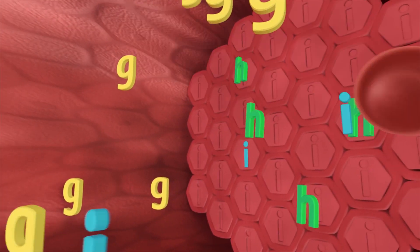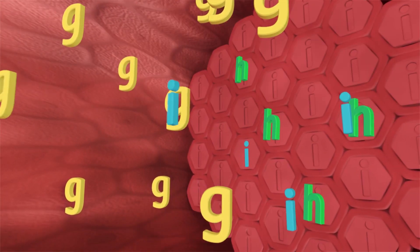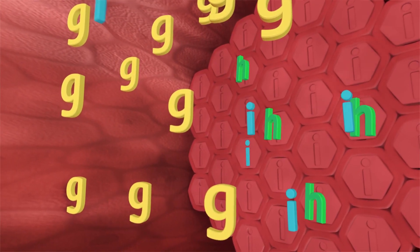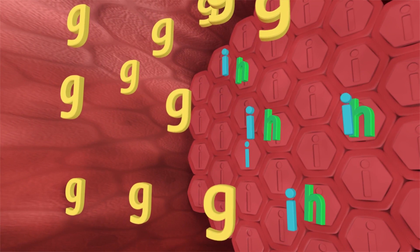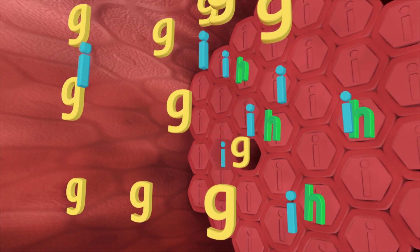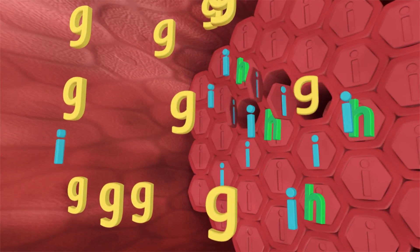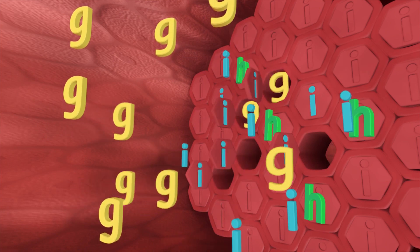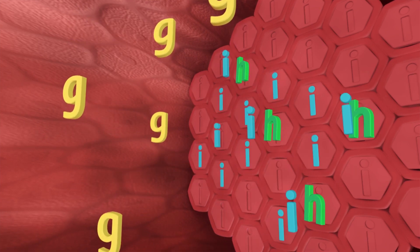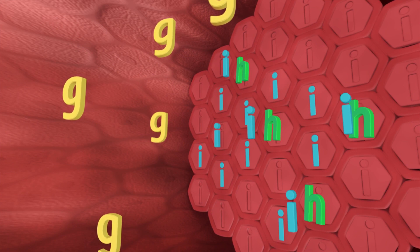During pregnancy, you need to produce 2 to 3 times more insulin to overcome insulin resistance. If the body is unable to produce the extra insulin required, too much glucose will stay in the bloodstream, leading to gestational diabetes.